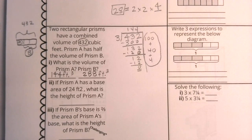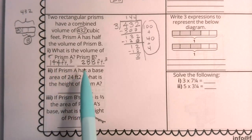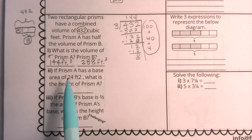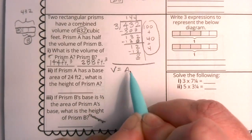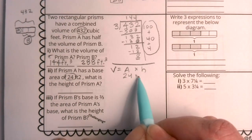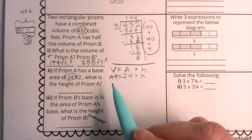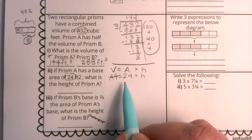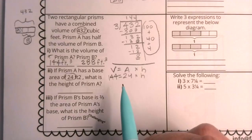Give yourself a pat on the back — we are a third of the way through this challenging problem. Number two asks us to look closer at prism A. We're going to ignore prism B for the time being. If prism A has a base area of 24, what is the height? Remember: volume equals area of the base times height. We know the area of the base is 24 and the volume is 144, so I have to divide 144 by 24 to find out what the height has to be.